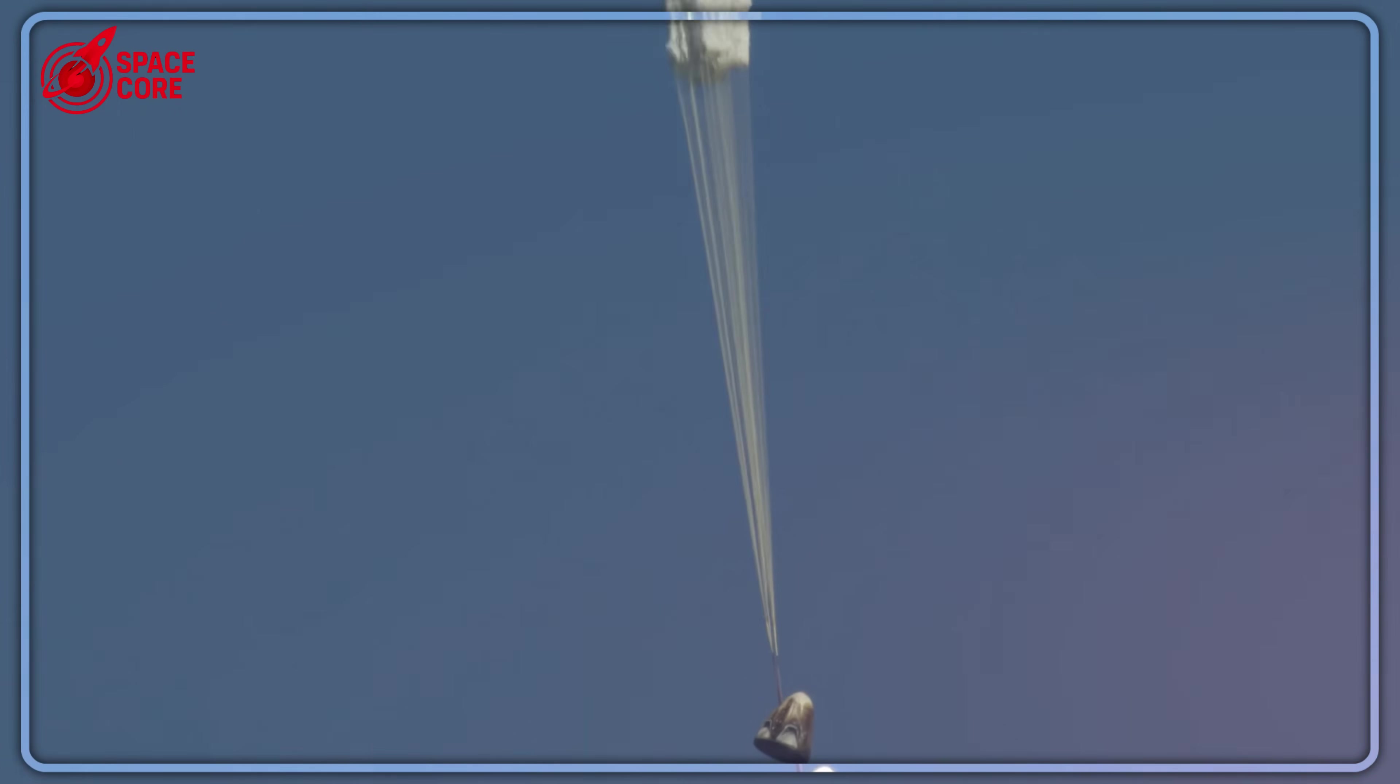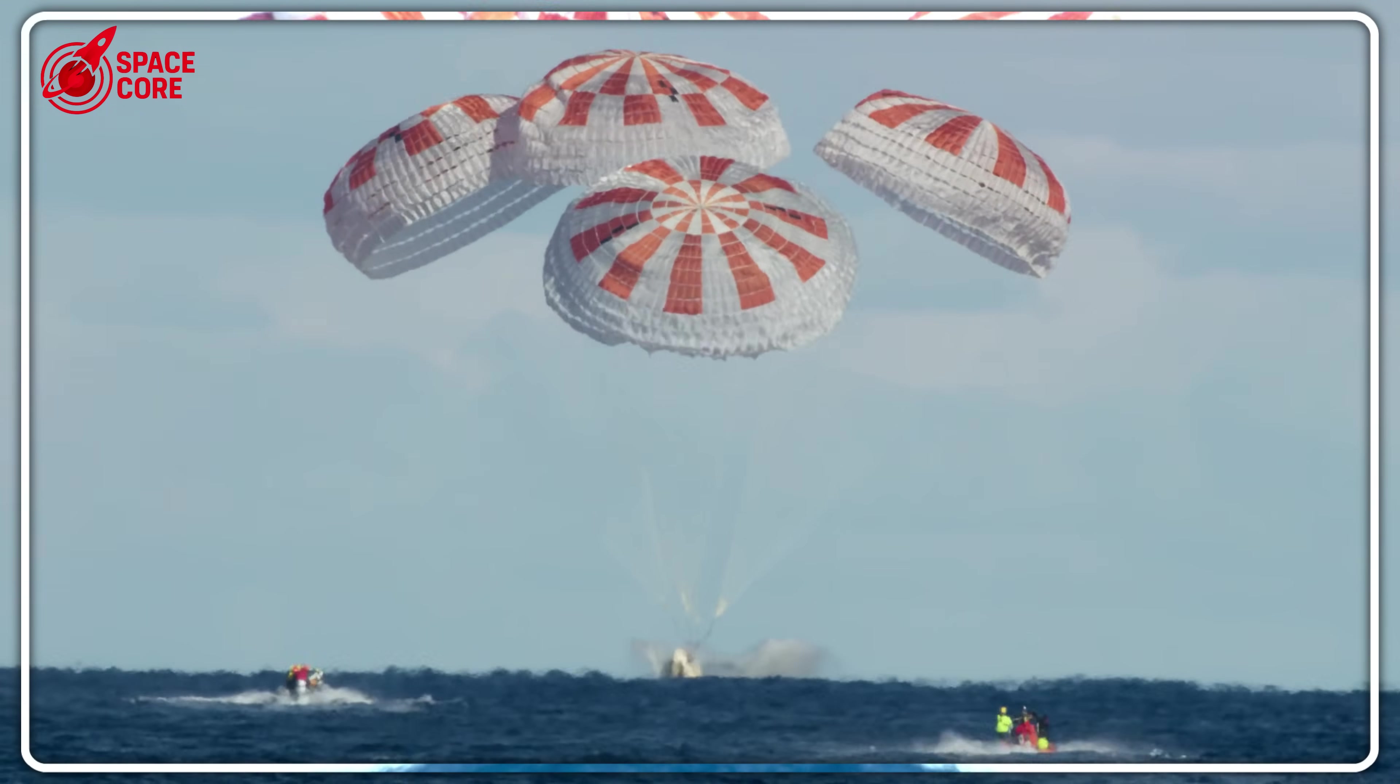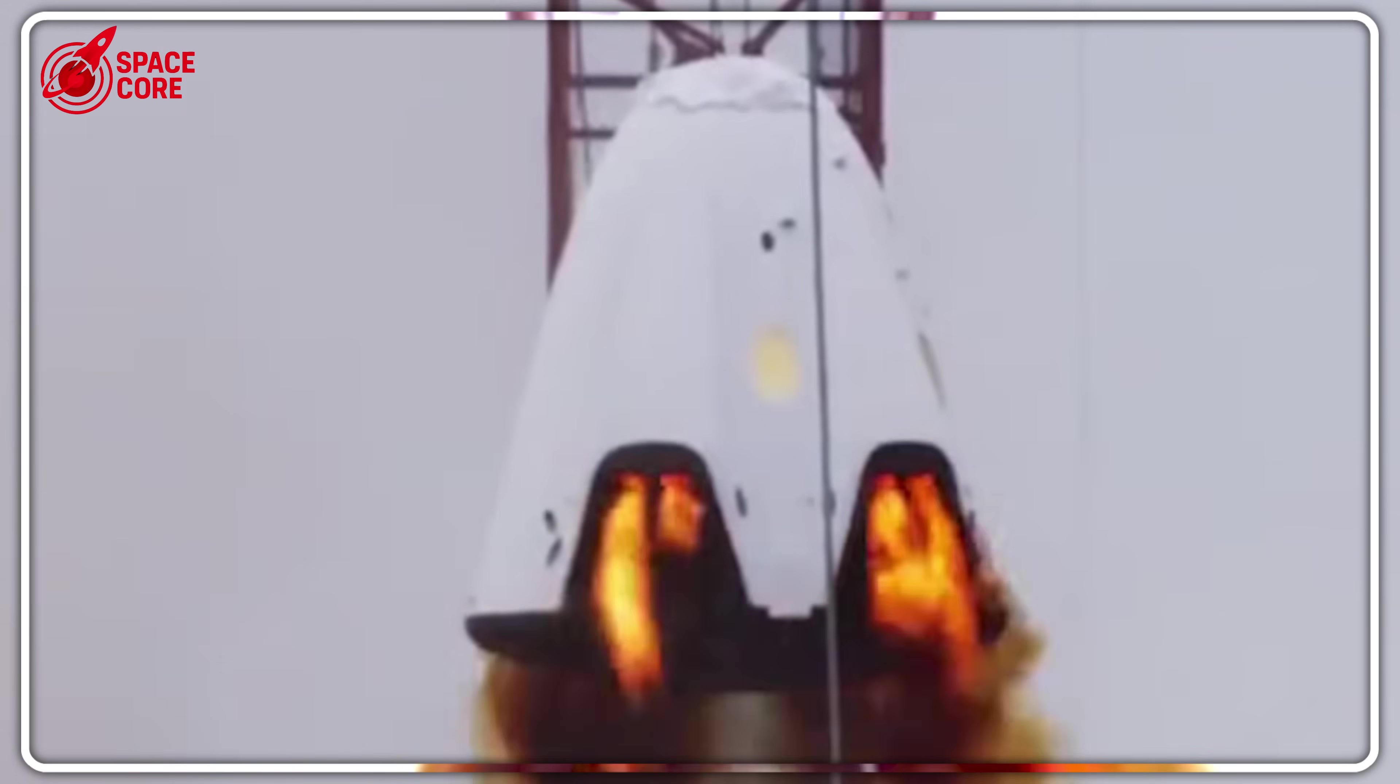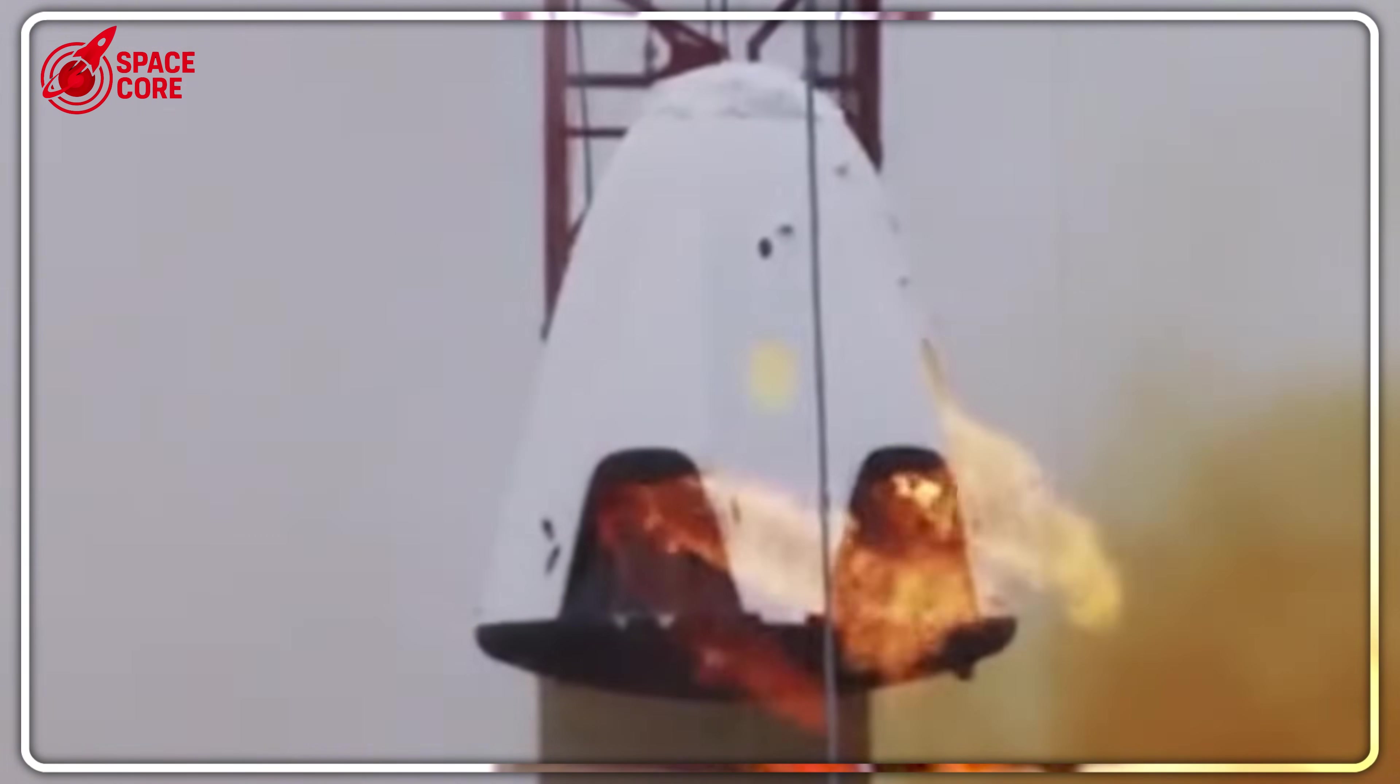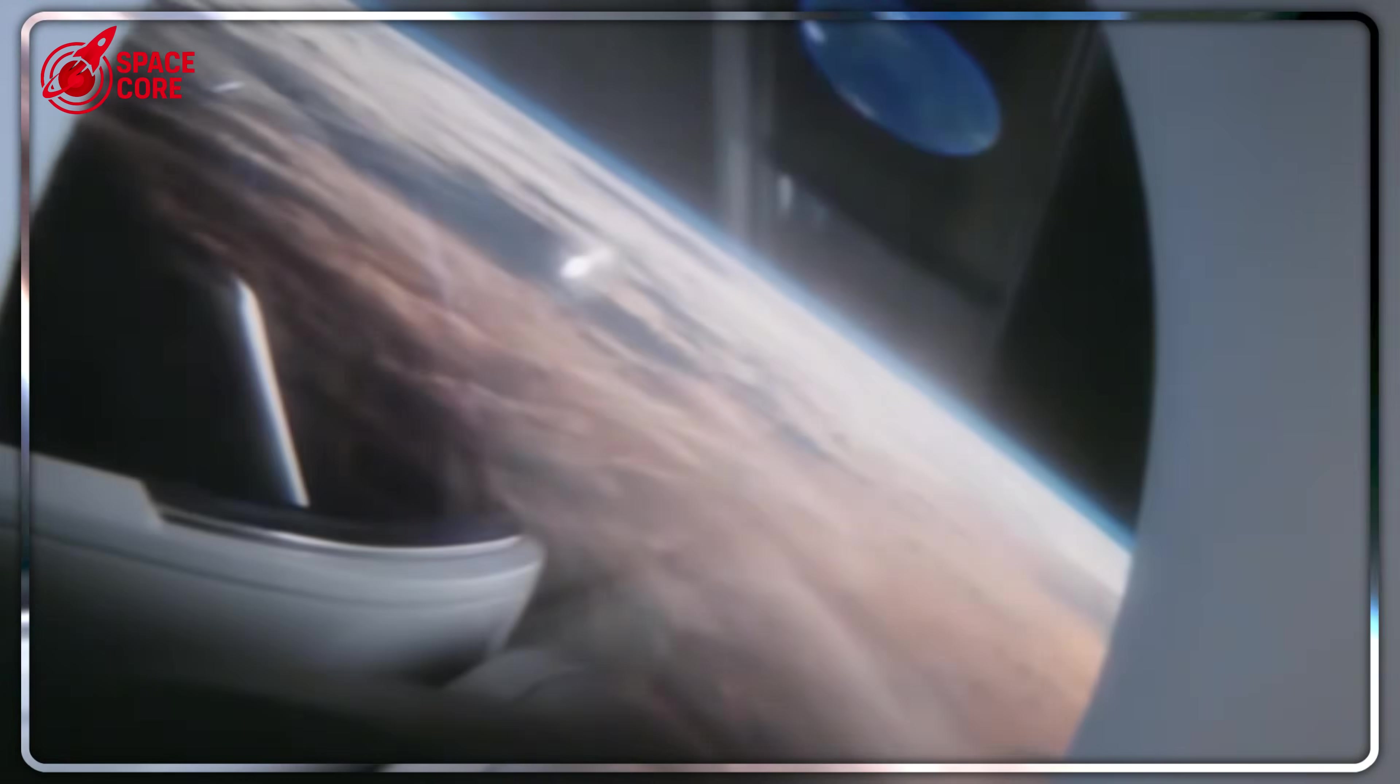Elon Musk hates Dragon's water landings. Why? Every splash means his Mars dream is failing. In 2019, Dragon exploded testing his secret fix. A landing system so dangerous, NASA banned it. But Musk found something crazier.